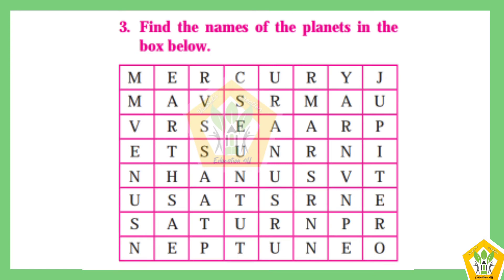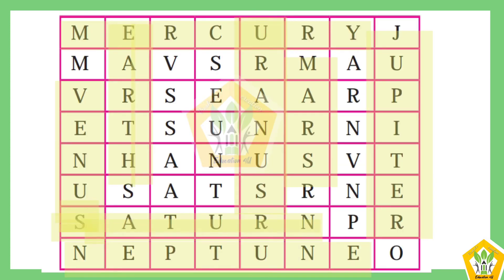Find the names of the planets in the box below. The answer is: Mercury, Jupiter, Mars, Uranus, Earth, Venus, Saturn, Neptune.